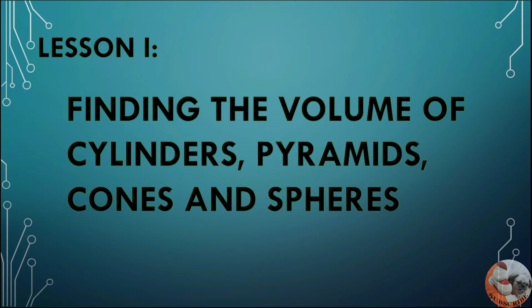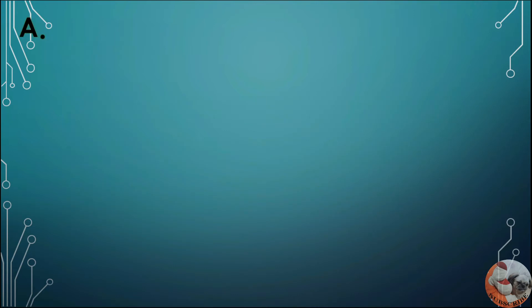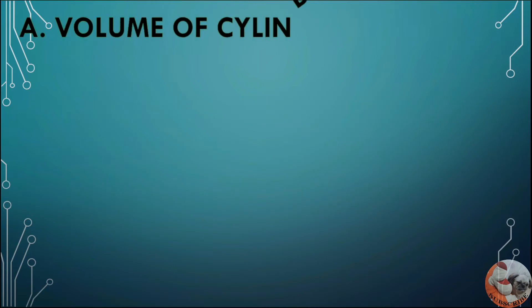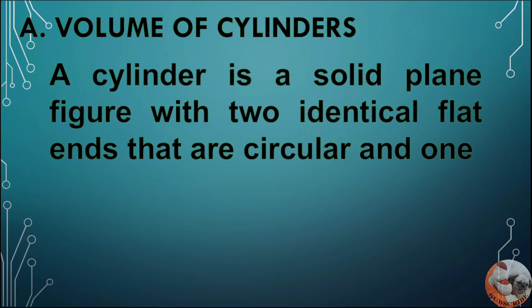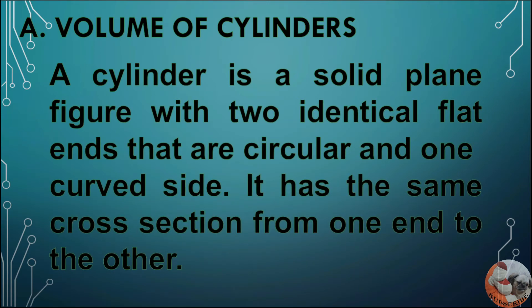Lesson 1: Finding the Volume of Cylinders, Pyramids, Cones, and Spheres. A. Volume of Cylinders. A cylinder is a solid figure with two identical flat ends that are circular and one curved side. It has the same cross-section from one end to the other.